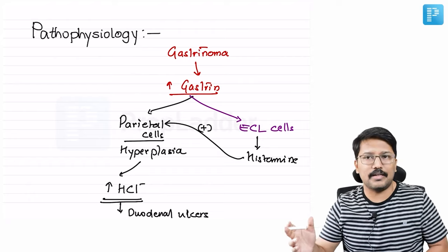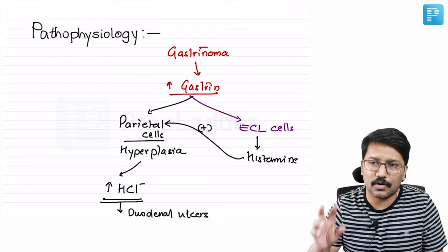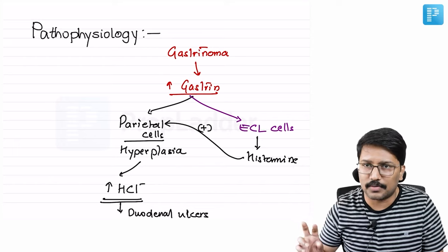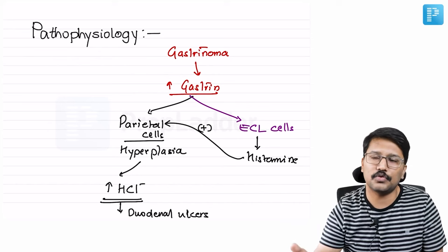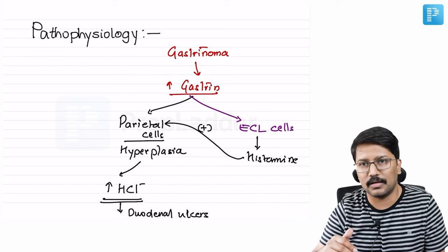If you remember from the peptic ulcer video, you will note that duodenal ulcers almost always are associated with high acid output. Gastric ulcers mostly are not associated with high acid output. This is a condition where there is high acid output, so mostly you will develop duodenal ulcers.